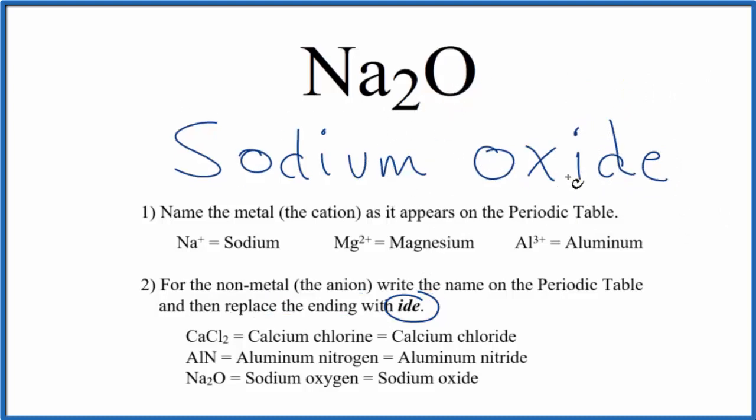If you were given the name sodium oxide and asked to write the formula, sodium on the periodic table, that's in group one, it has a one plus ionic charge. Oxygen has a two minus. So you can see we need two of these positive charges to balance out the two minus.